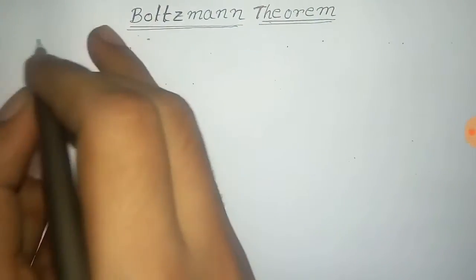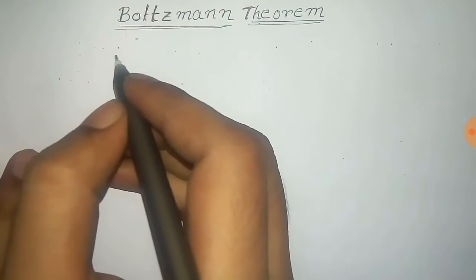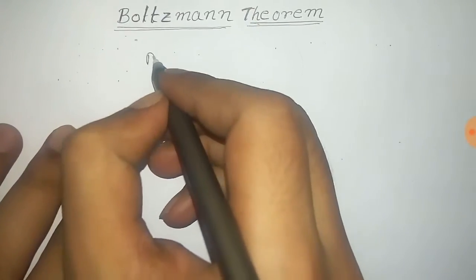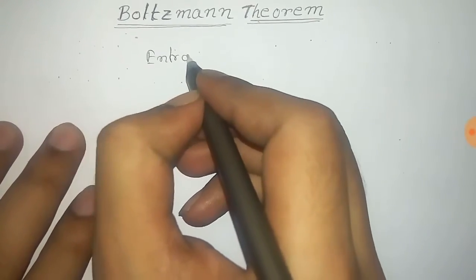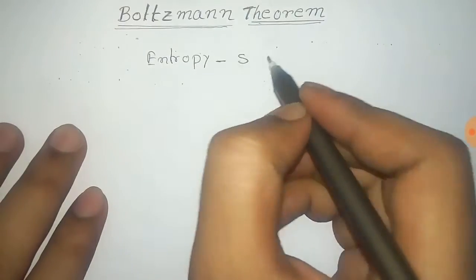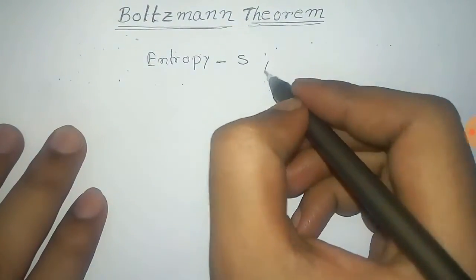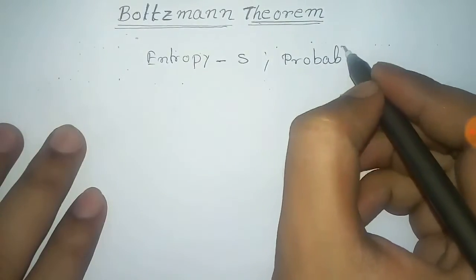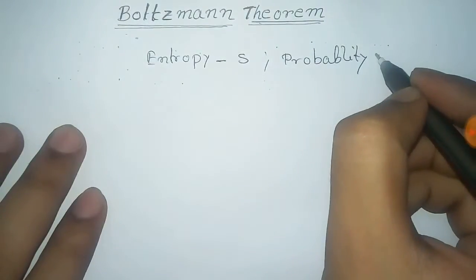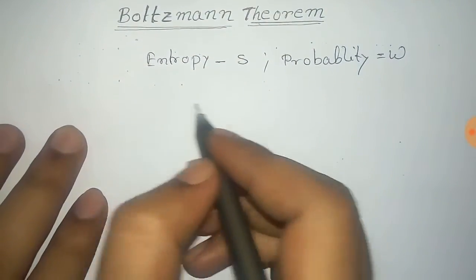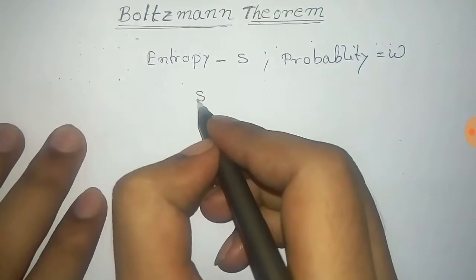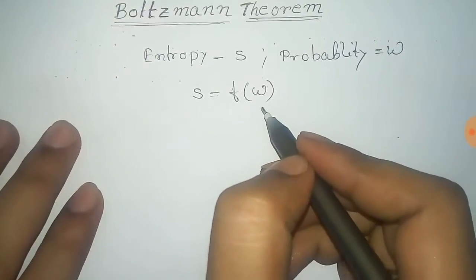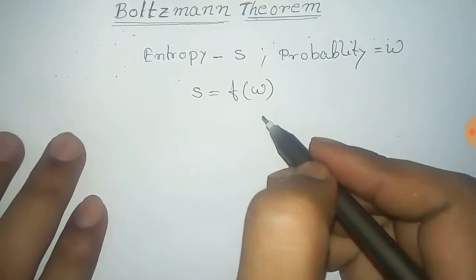In this video we prove the Boltzmann theorem which connects the entropy of a system with its probability. Let us take a system with entropy S and probability Omega. We know that entropy is a function of probability, so we can say that S equals a function of Omega.